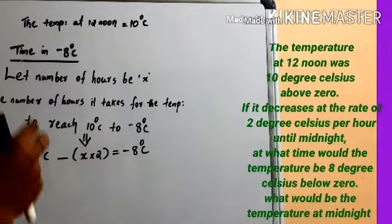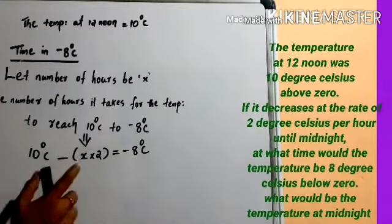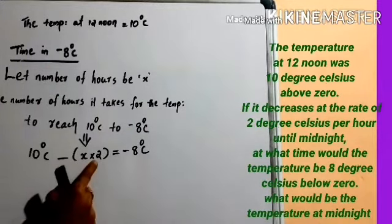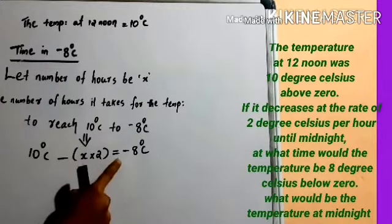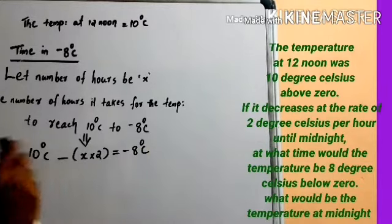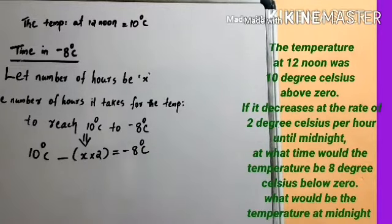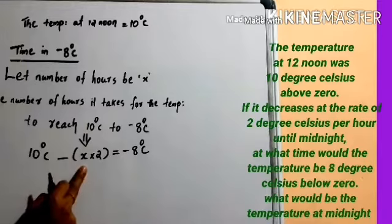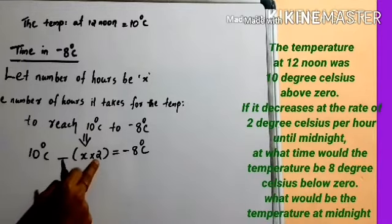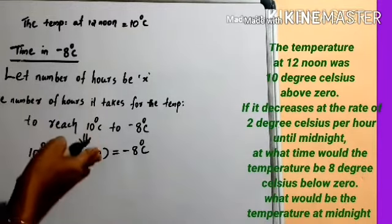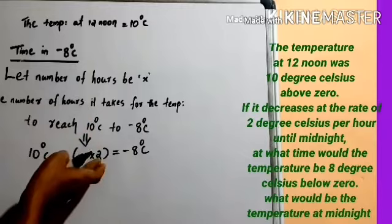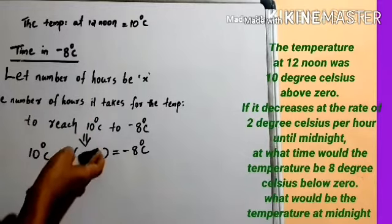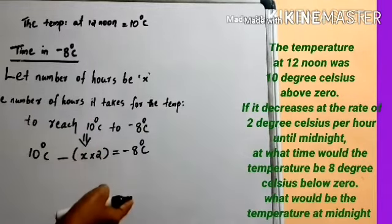Therefore, 10 minus x times 2 equals negative 8 degree Celsius. Here, x represents the number of hours, and 2 represents the decreasing rate of 2 degree Celsius per hour.